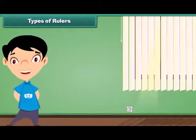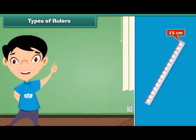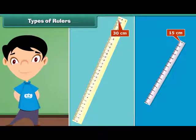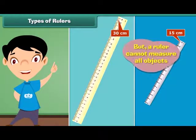A ruler comes in different length. The first ruler can measure length up to 15 centimeters. The second ruler can measure length up to 30 centimeters. But a ruler cannot measure all objects.